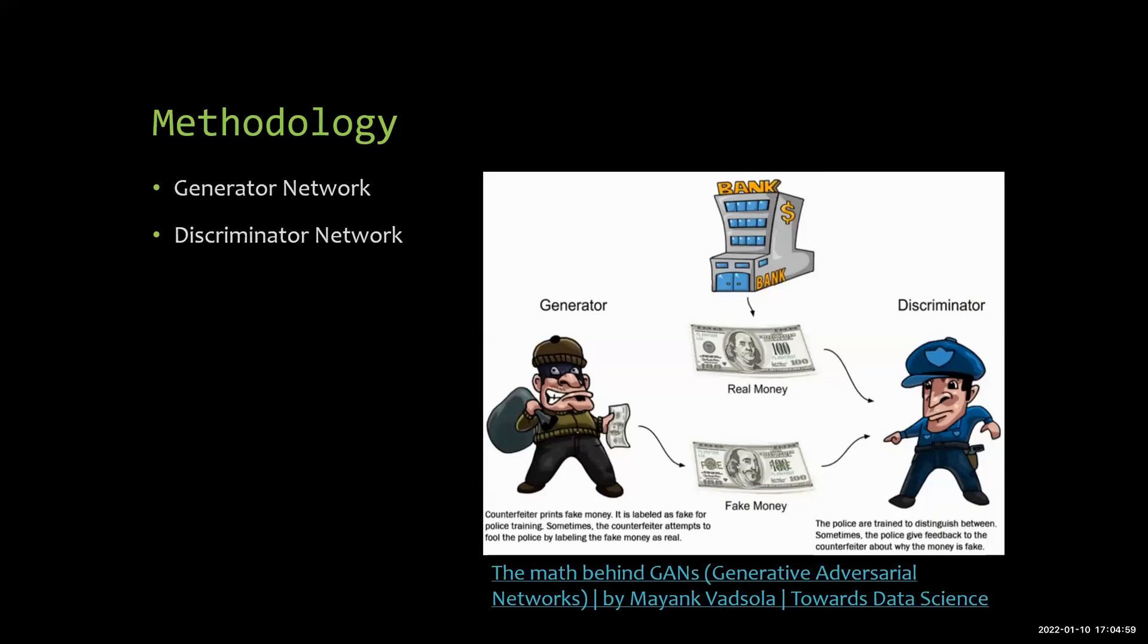For the methodology, the SRGAN method utilizes two networks during the training. One to generate the upscaled image, also known as the generator network, and one to see how good is the generated images compared to the original high resolution image. The second network is known as the discriminator network.